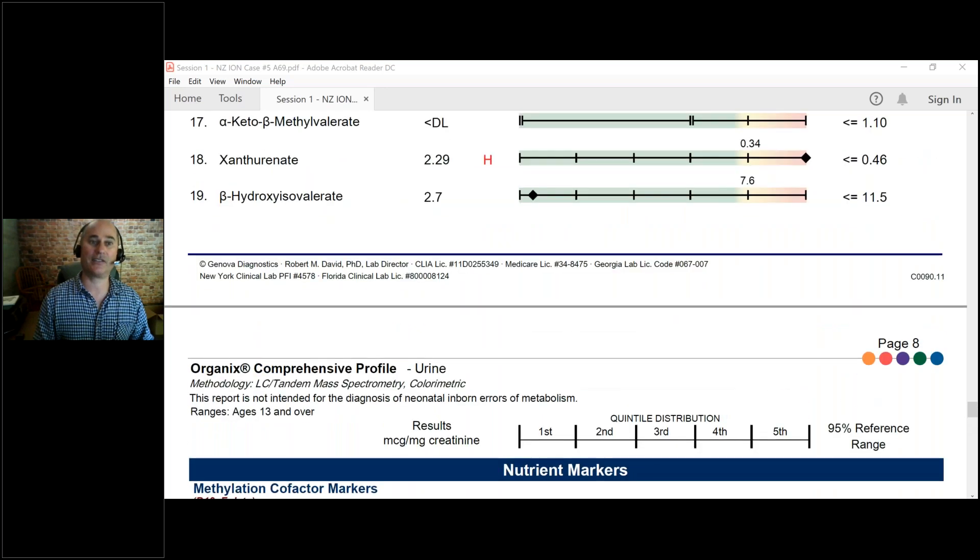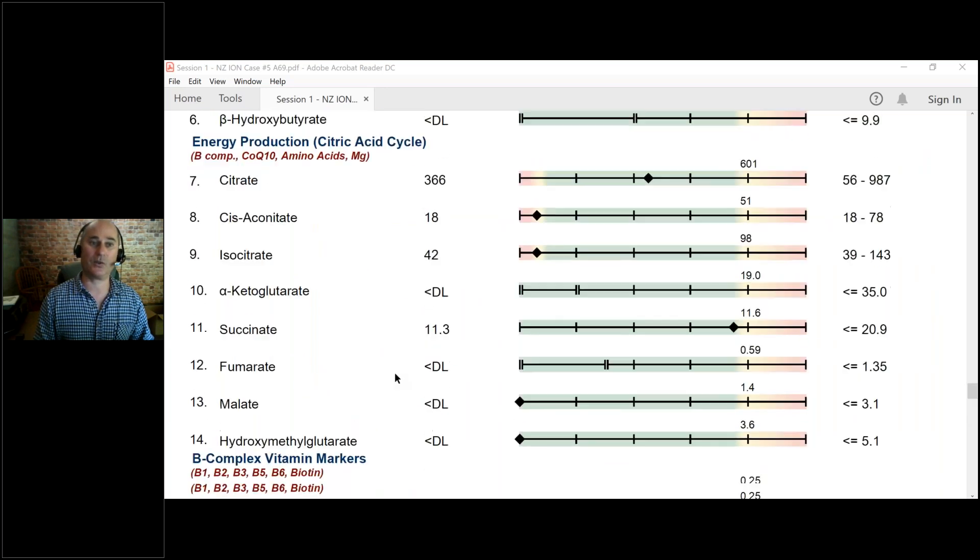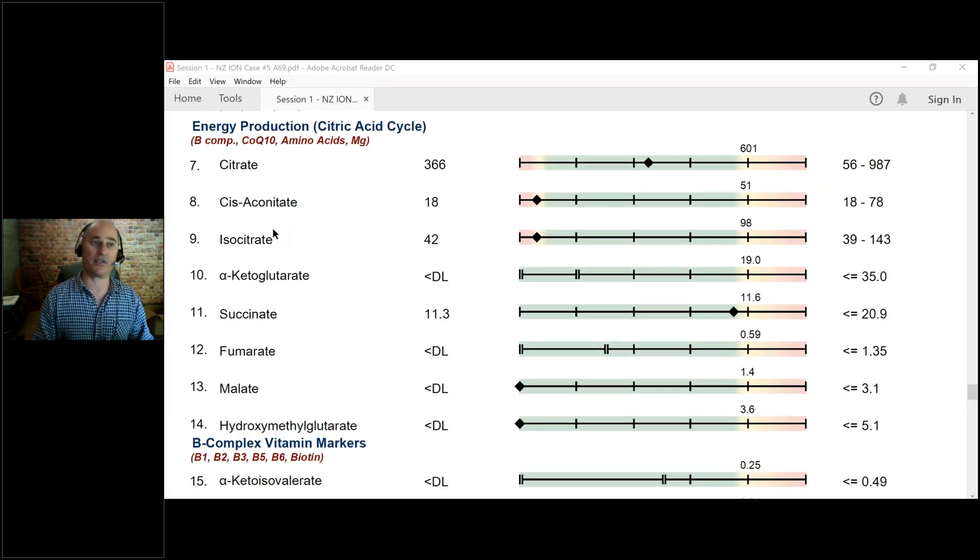And then the next section that's super important is energy production. This is an analysis of how well your mitochondria are doing. The mitochondria are responsible for burning fat, for producing energy, for controlling and running the energy in your brain and your liver and your heart—extremely important. So again, this section looks at mitochondrial performance.